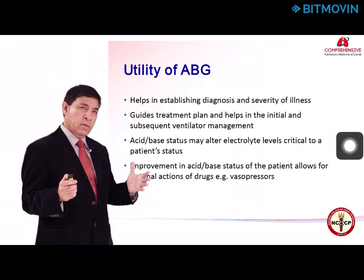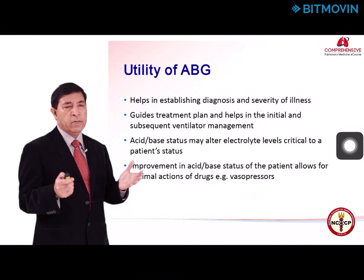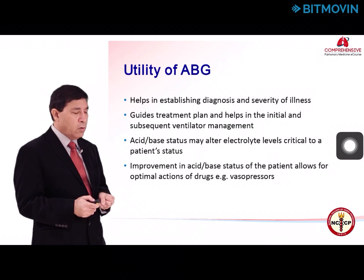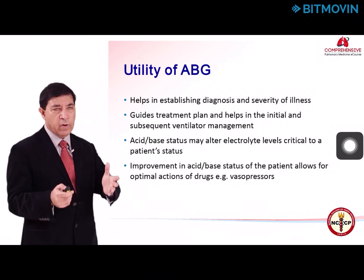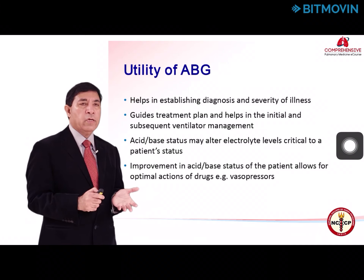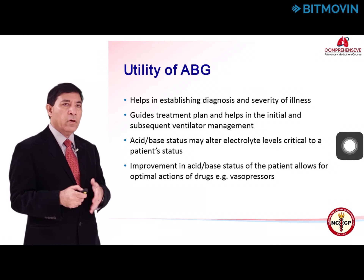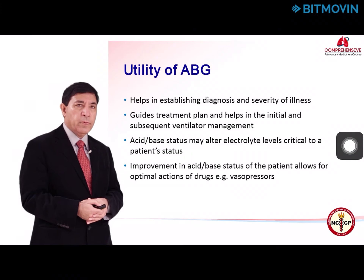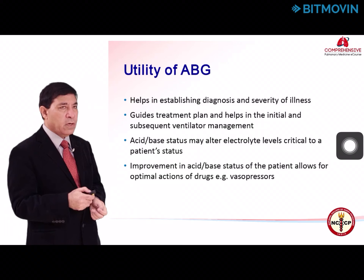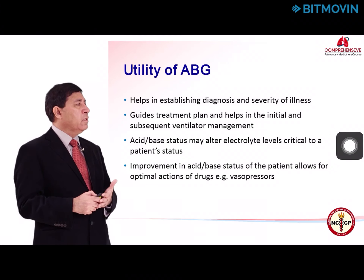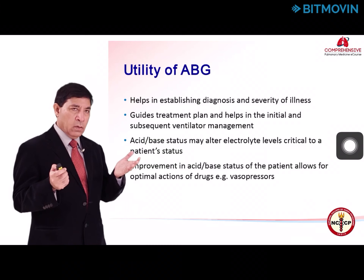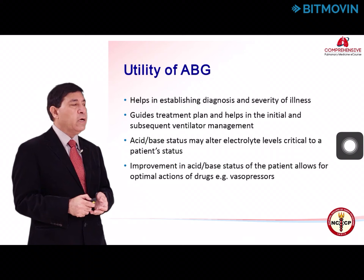How does arterial blood gas analysis help a critical care physician? It not only helps in making a diagnosis but also in assessing the severity of illness. For a case of ARDS, through the PaO2/FiO2 ratio you can quantitate the severity of ARDS. For a patient with acute exacerbation of COPD, from the degree of acidemia you can assess severity and guide initial treatment and subsequent ventilator management.